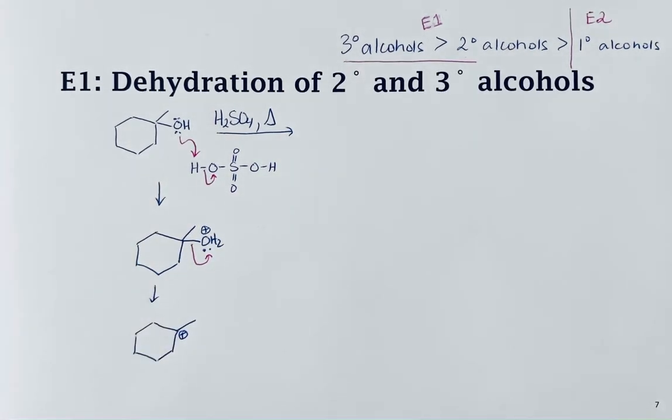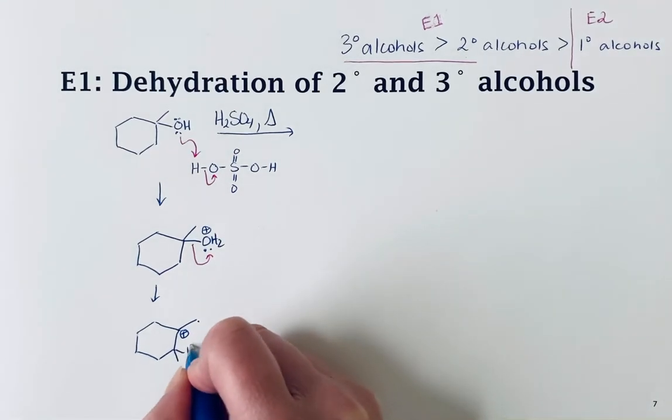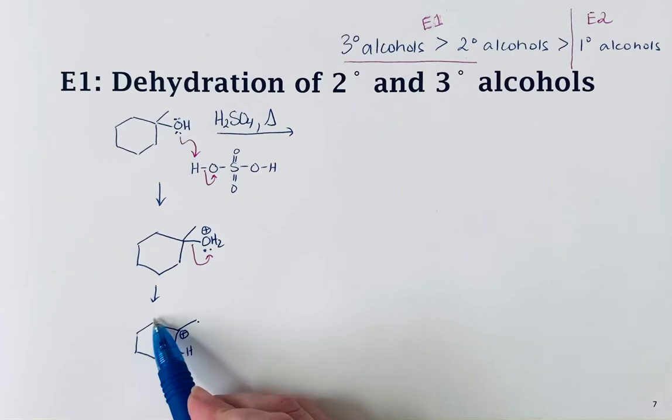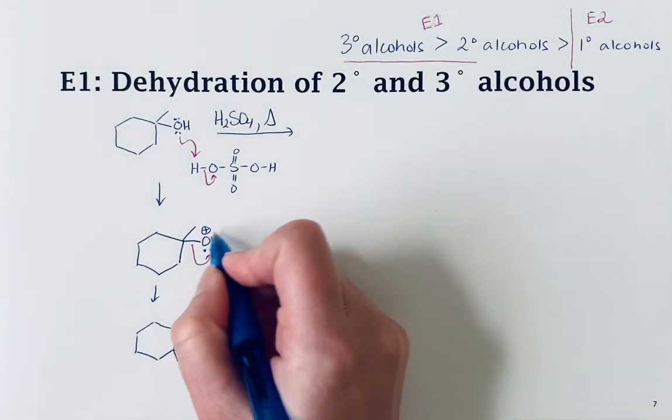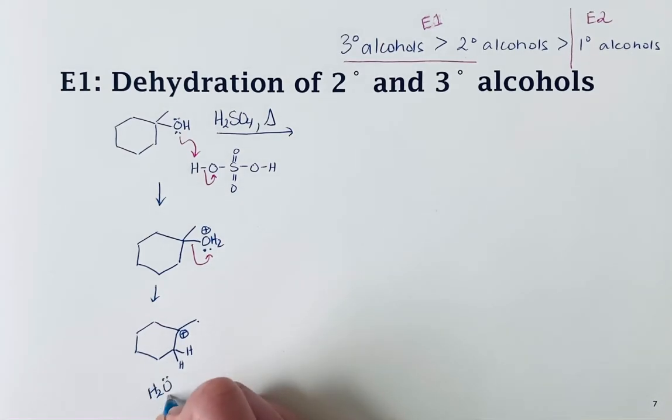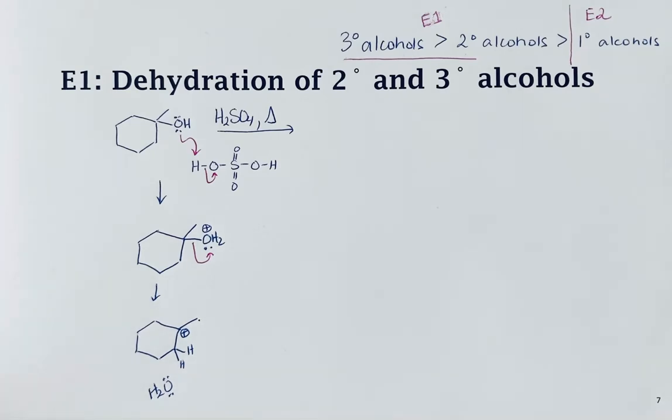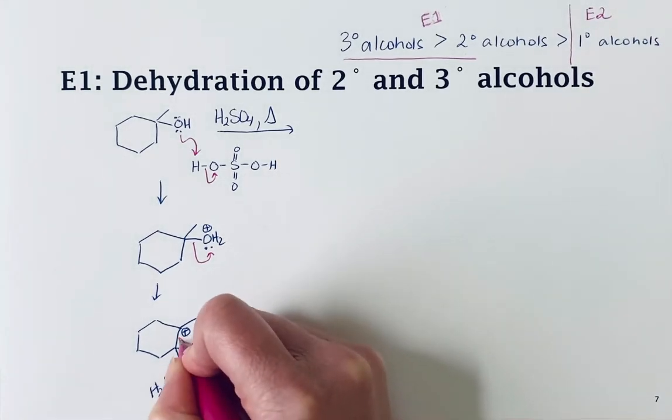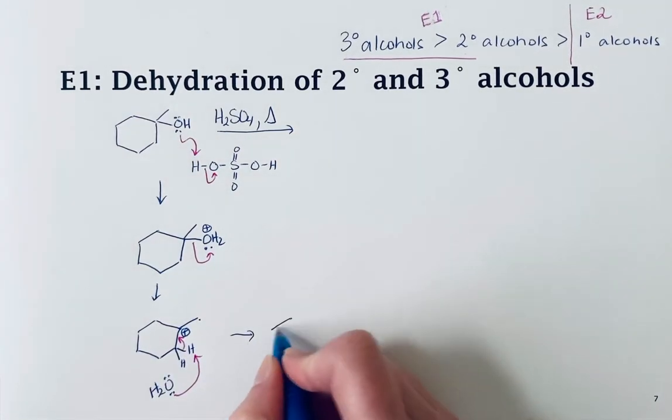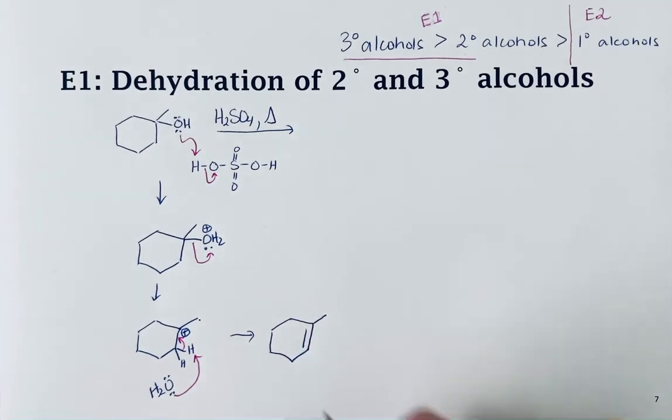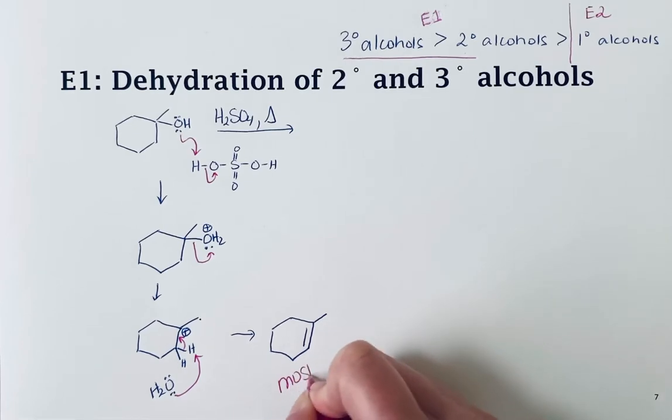In an E1 reaction, you form the most stable alkene—that's the fastest pathway. We've got beta hydrogens on this N-methyl group and equivalent beta hydrogens on these two positions. We're going to remove the hydrogen that gives us the most substituted alkene. Water, which we generated, acts as a base and removes one of those beta hydrogens, and those electrons come in to form the alkene. So we form the most substituted alkene as the major product.